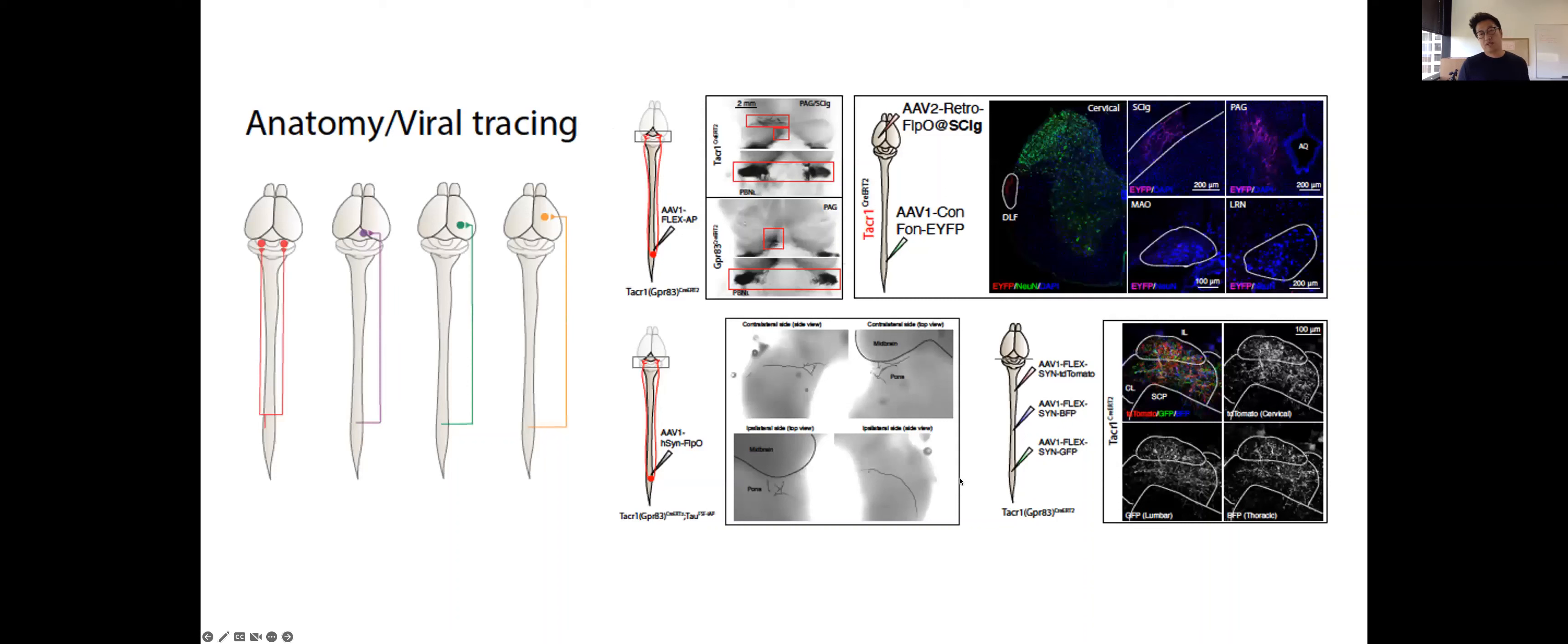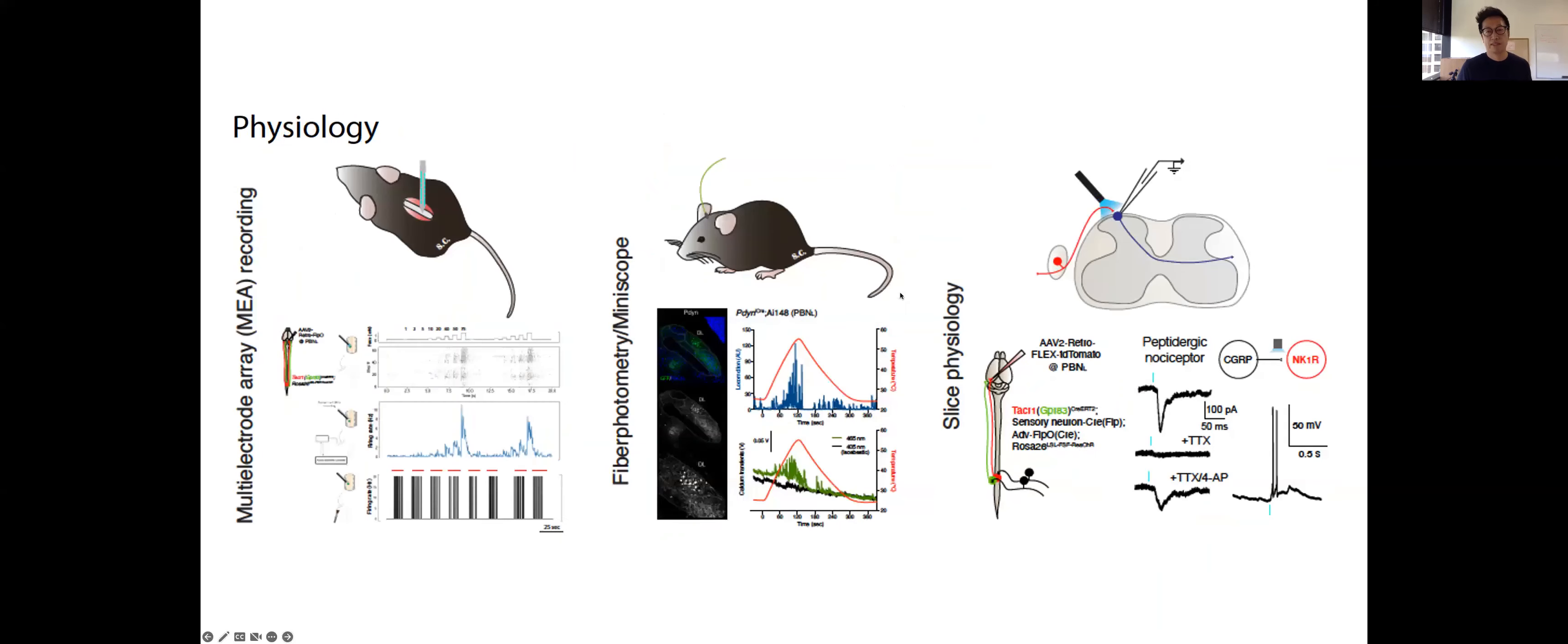To address these questions, my lab will use a variety of neural circuit analysis tools. First of all, it is important to understand the structure of the system because the form tells you about the function of the system. We will utilize a variety of anatomical analysis tools, including viral tracing and sparse labeling and tracing of single neurons. And of course, it is important to understand the response properties of each component of the circuit and their changes in different states. We will employ different physiological analysis tools, including in vivo multi-electrode recordings, fiber photometry, miniscope imaging in awake behaving animals, and also in vitro slice physiology.